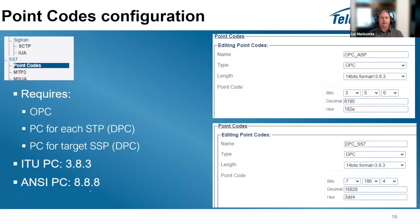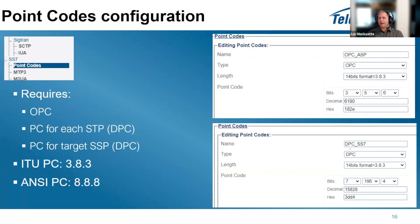In the web interface, navigate to point codes and configure your OPC - at least one identifying your system - and one DPC for each STP or SSP you connect to. You can choose the format as ANSI or ITU, and enter values as bits, decimal, or hexadecimal. The interface shows which link sets and routes are using each point code.